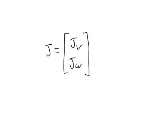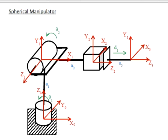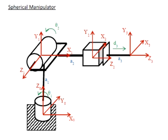I'm now going to show you an example of how we calculate a Jacobian matrix. For this example, I'm going to use the spherical manipulator.